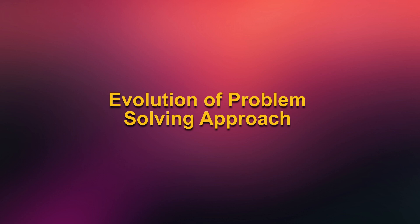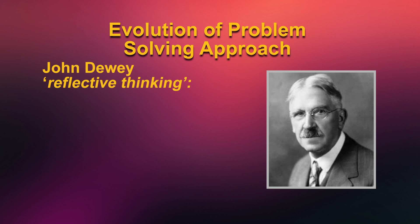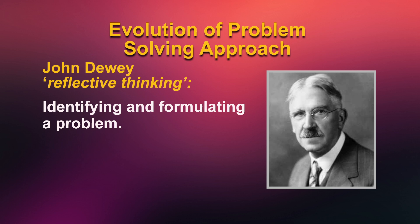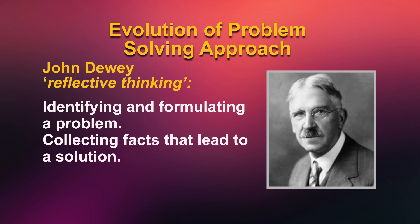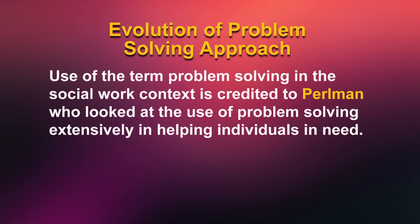Let us understand the evolution of problem solving approach. It was William James in 1907 who advocated problem solving as a field of inquiry into human problems. Later in 1910, John Dewey described the term reflective thinking, which comprises four components: identifying and formulating a problem, collecting facts that lead to a solution, examining each solution, and deciding the action to be taken. Use of the term problem solving in the social work context is credited to Perlman, who looked at its use extensively in helping individuals in need.